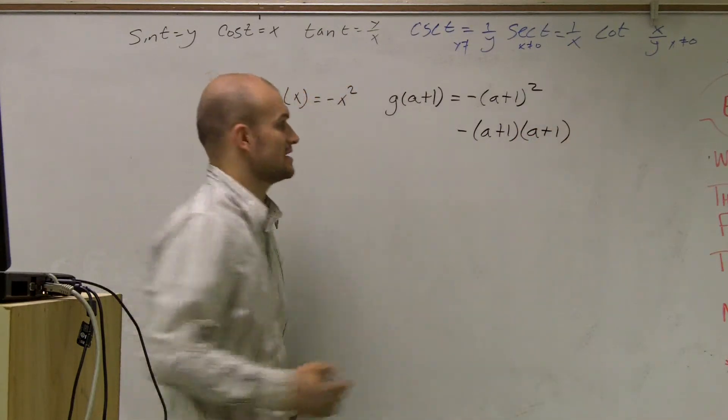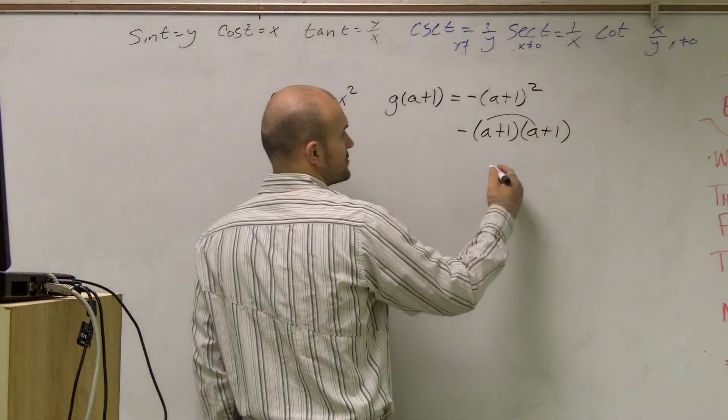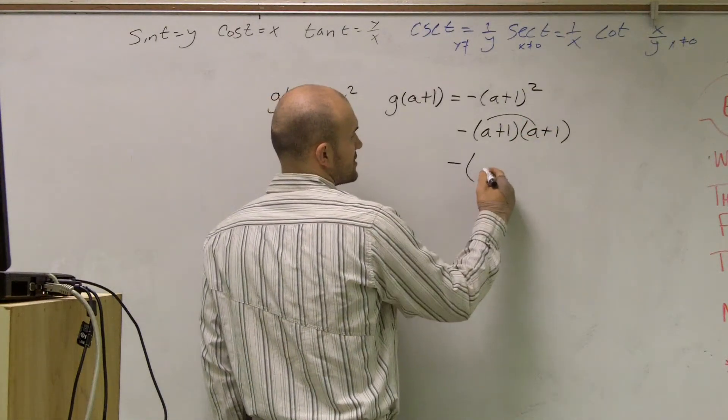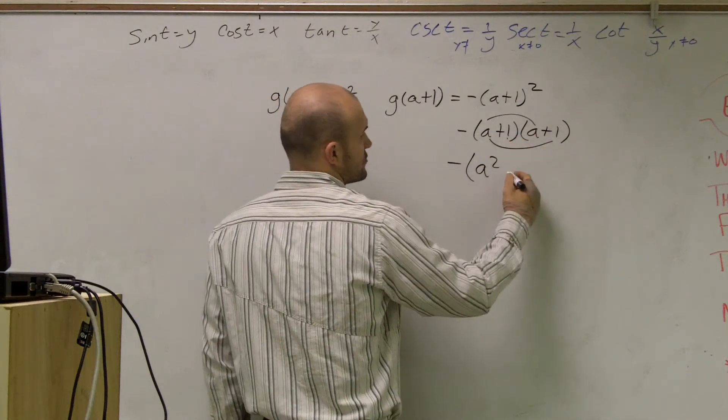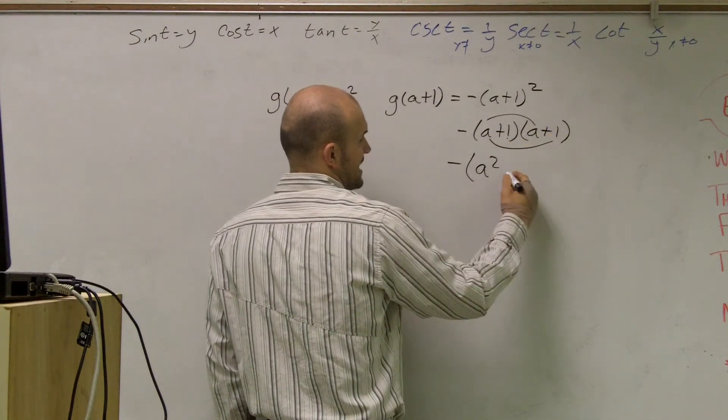Then, using FOIL technique, I multiply the first two terms, which gives me a². Then I multiply the outer terms, which gives me a times 1, which is a.